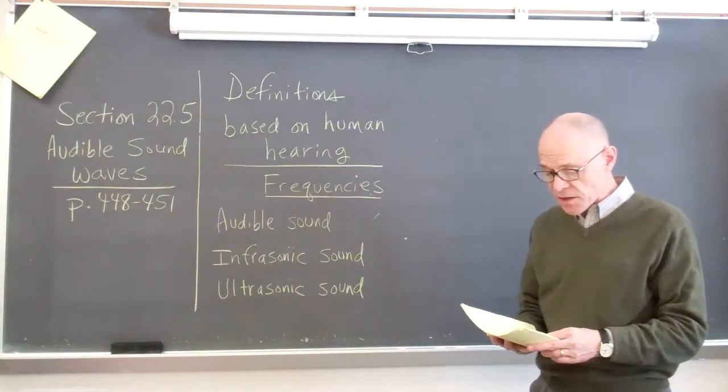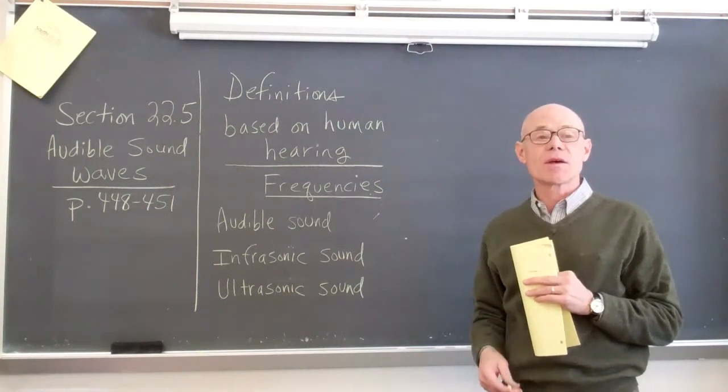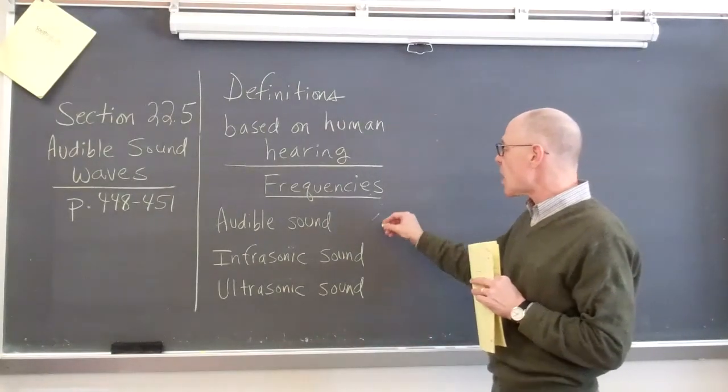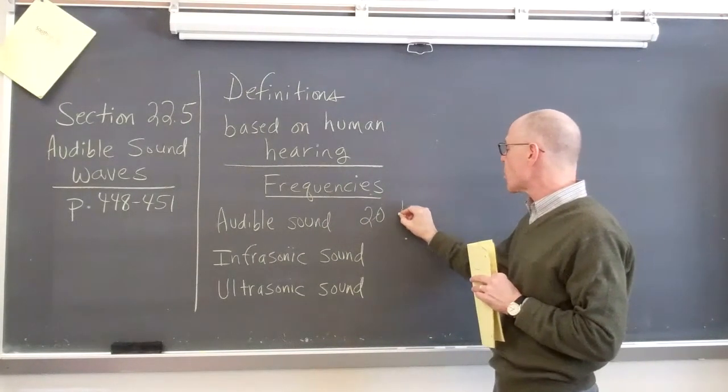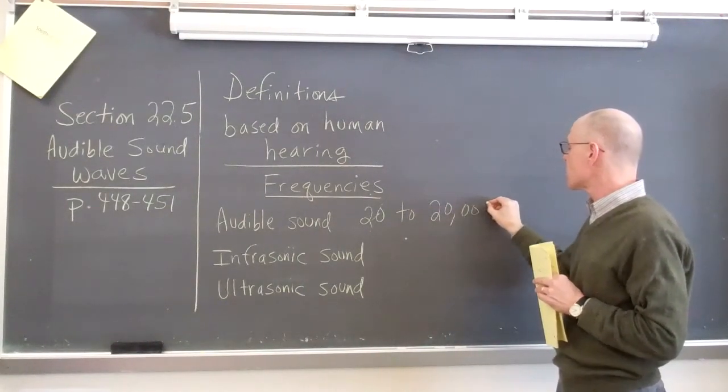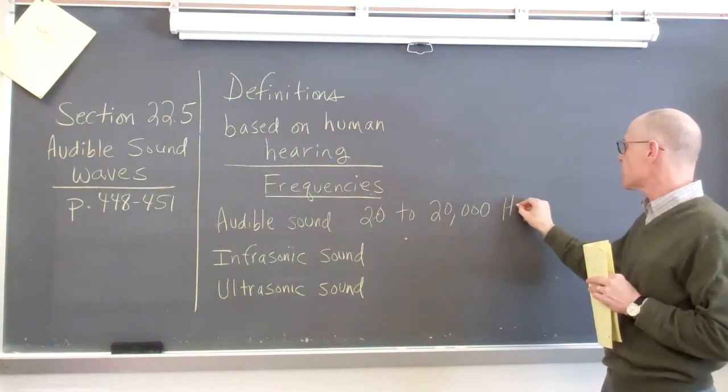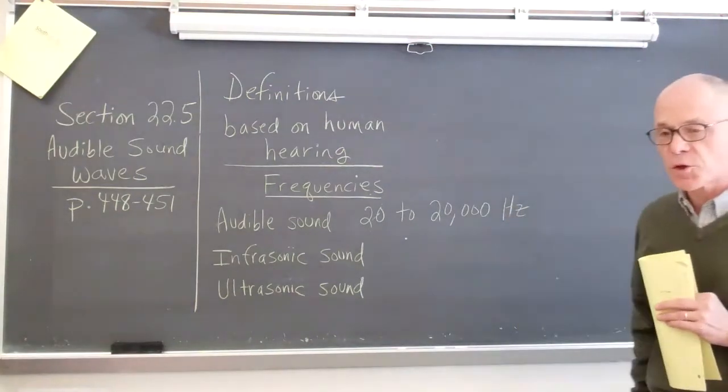There are three different categories of frequencies with important definitions. The first one is audible sound. What is the typical frequency range of sound that humans can hear? Audible sound is typically from 20 up to 20,000 hertz. That's a generally accepted range for human hearing.